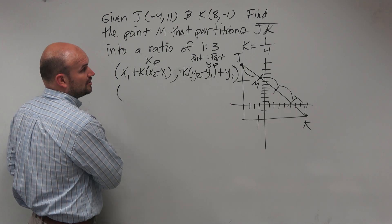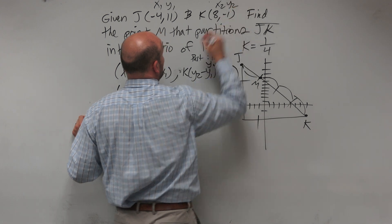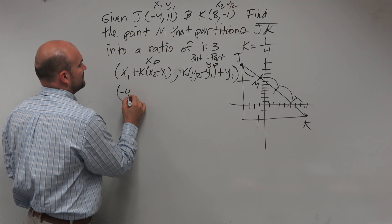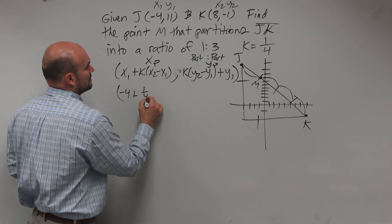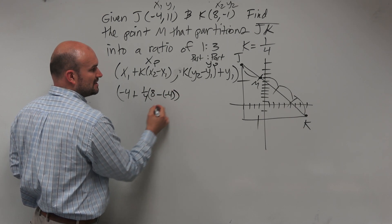So now it's just going to be a plug and chug. My k here, let's call this x1, y1, x2, y2. So I have negative 4 plus 1 fourth times 8 minus negative 4. Notice my use of parentheses.